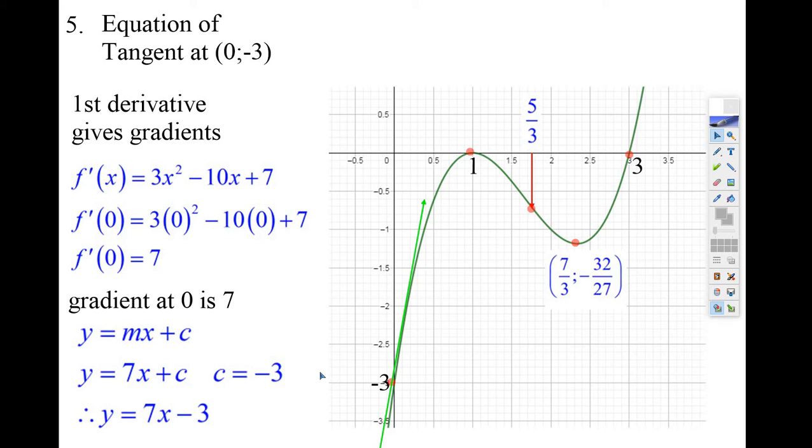y equals 7x minus 3 when x is 0. And we had to use the first derivative to get that gradient. Let's look at the next question.